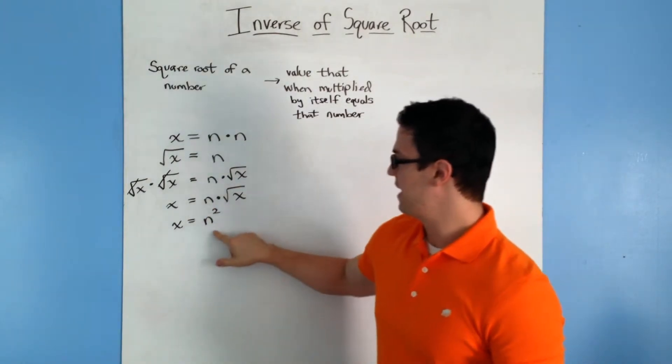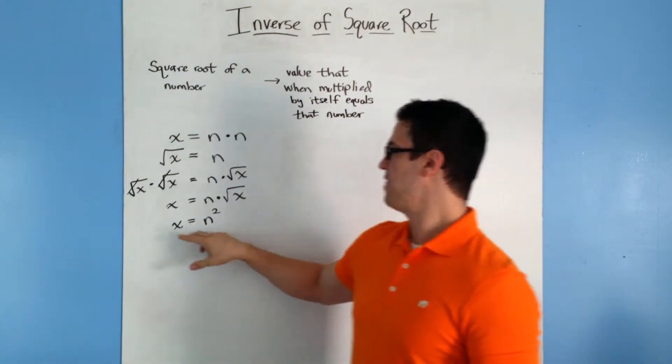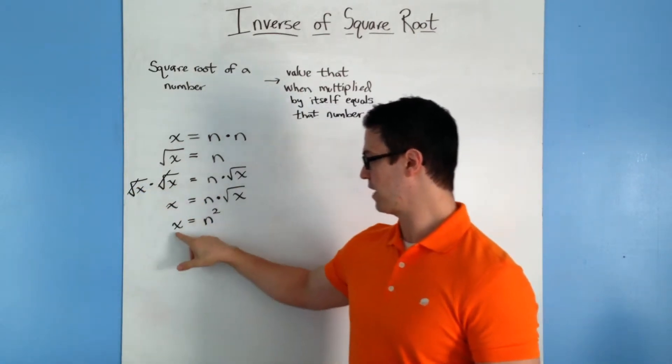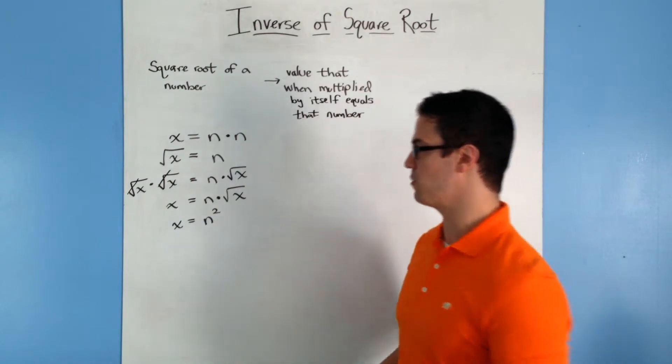Which is exactly what we started with up here. So it makes sense that we prove, basically, that you can cancel out square roots just by multiplying it by the square root of itself. Okay, so x equals n squared. It's what we started with.